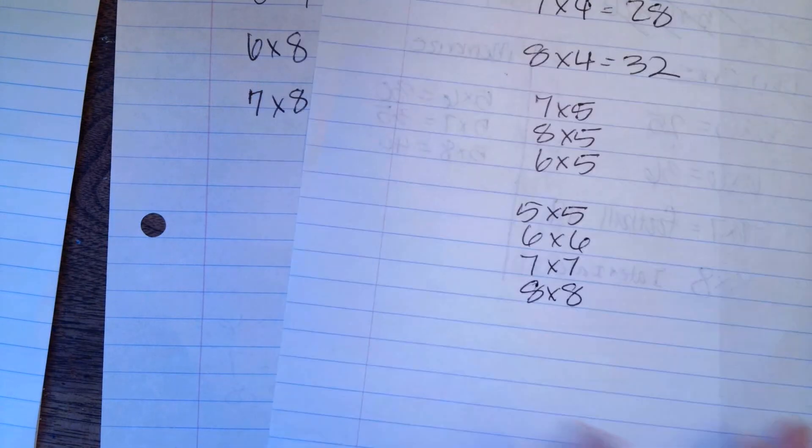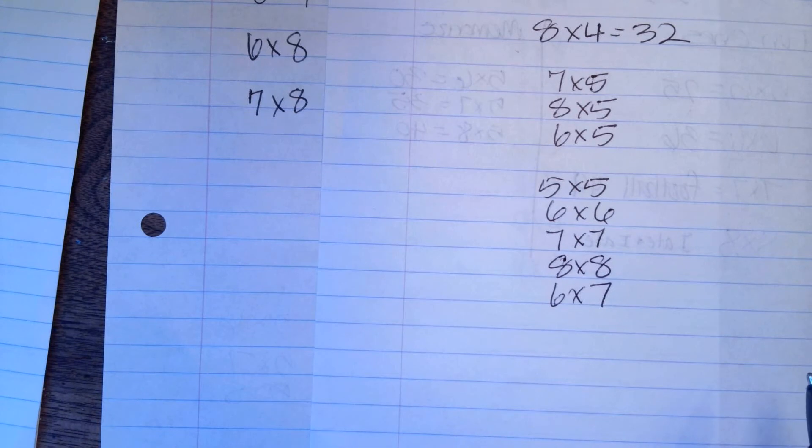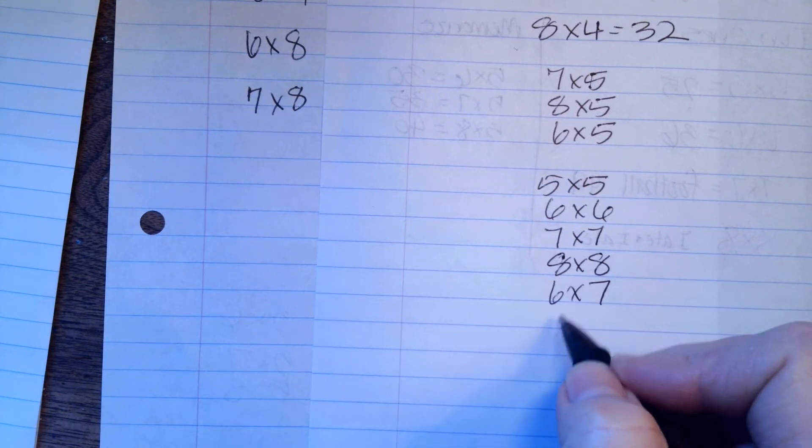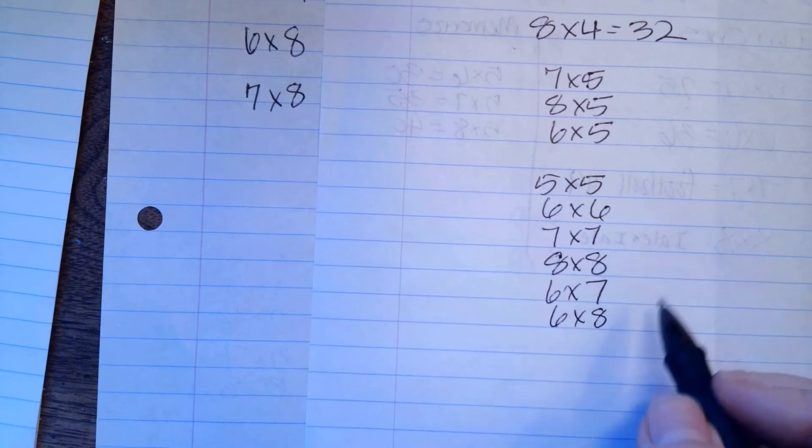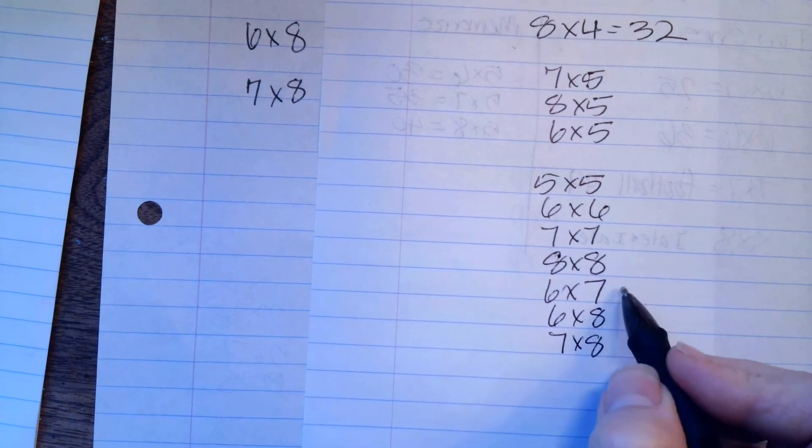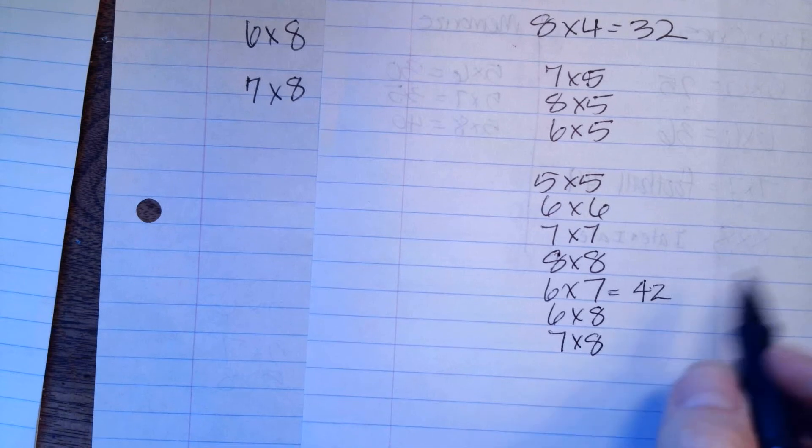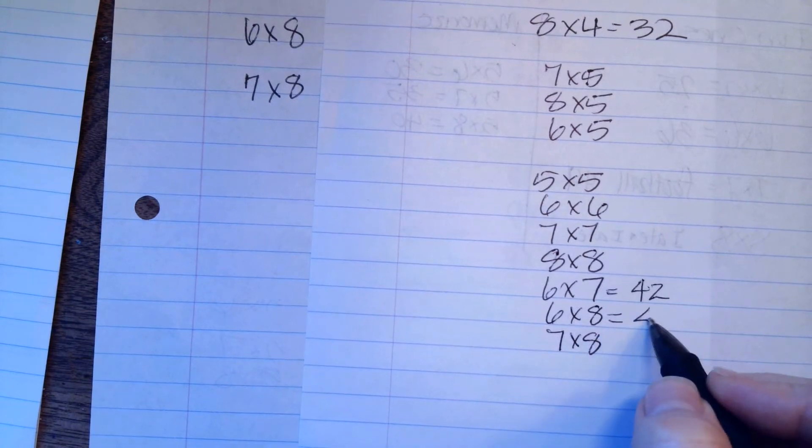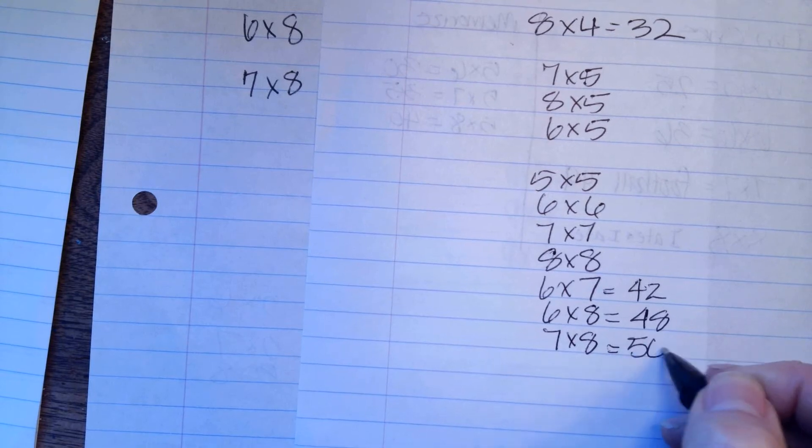These ones are to memorize. You'll probably watch this video for 3 weeks, and maybe 4 weeks, and then you'll start to get it. 6 times 7 is 42, 6 times 8 is 48, 7 times 8 is 56. So the new ones are 7 times 6 is 42, 6 times 8 is 48, and 7 times 8 is 56.